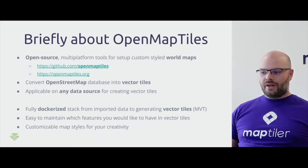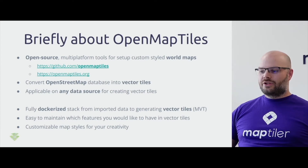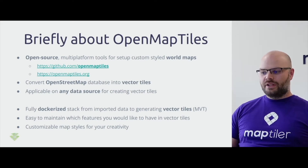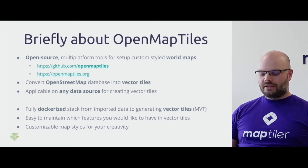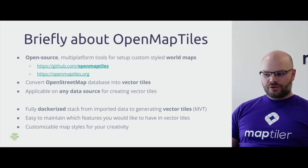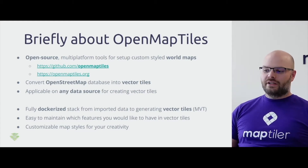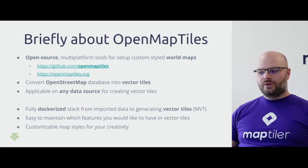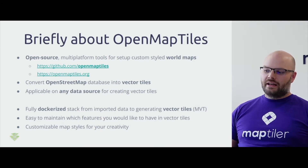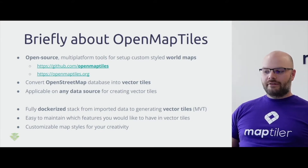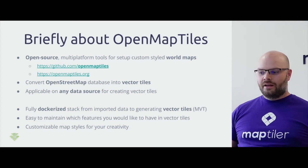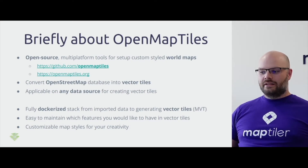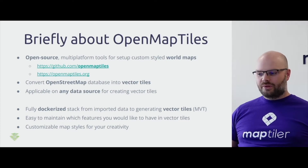OpenMapTiles is an open source project which allows you to convert OpenStreetMap data or any other spatial data through a PostGIS/PostgreSQL database to vector tiles in MBTiles format. The entire stack is fully Dockerized, meaning that from importing data to generating vector tiles everything runs in Docker. The data included in vector tiles is easily and fully manageable in SQL files and YAML files.